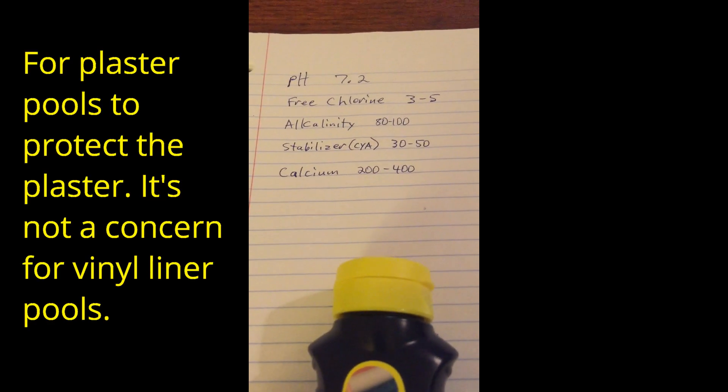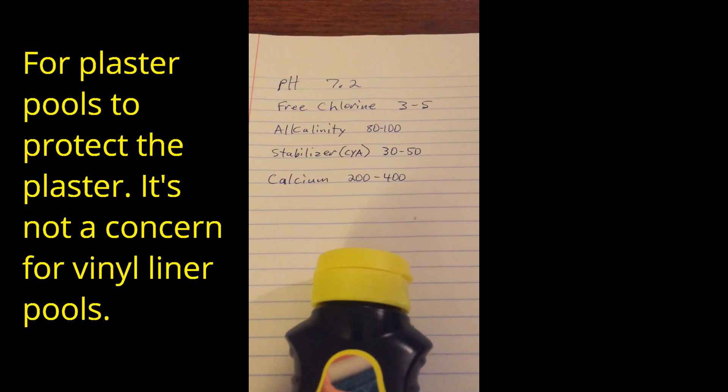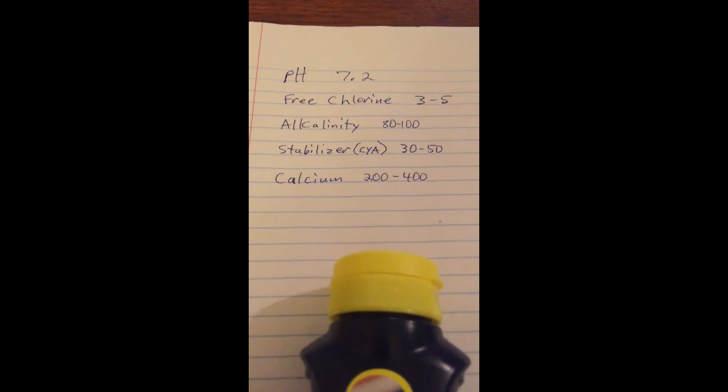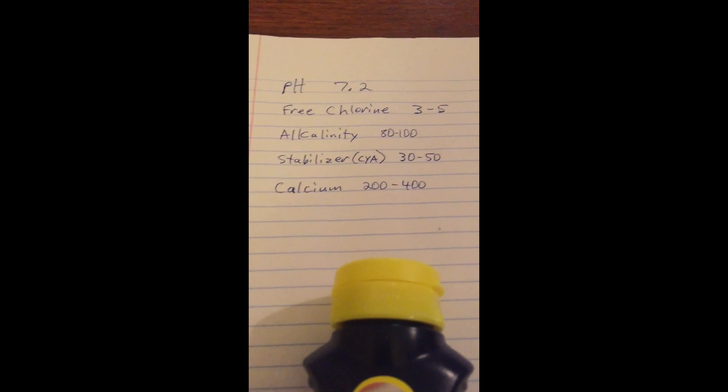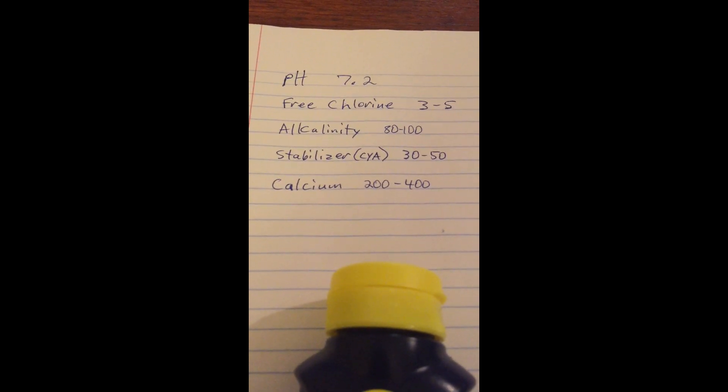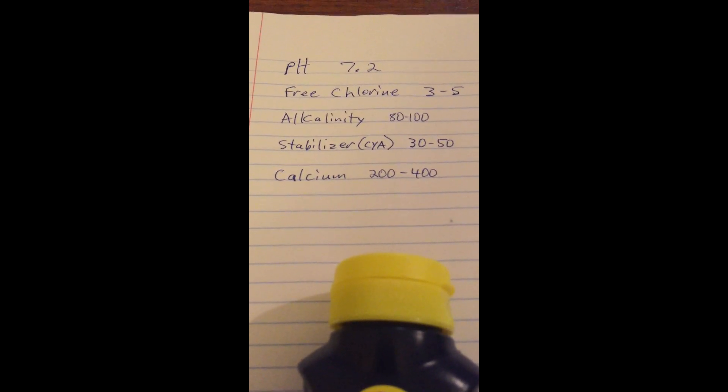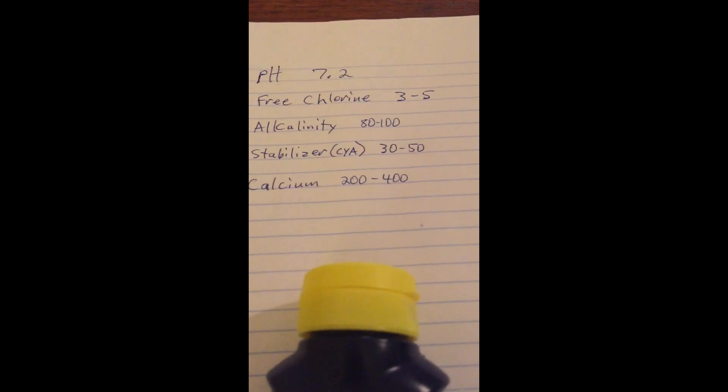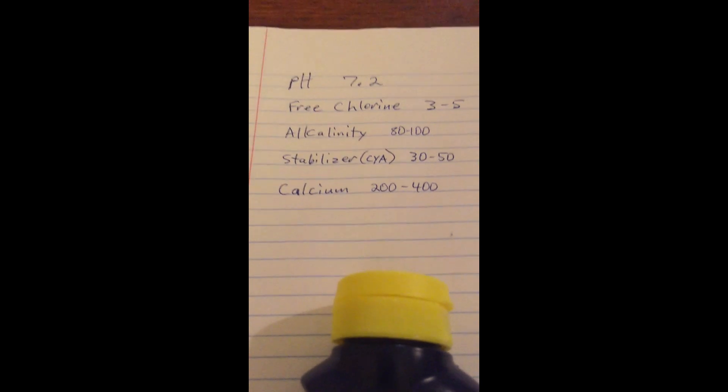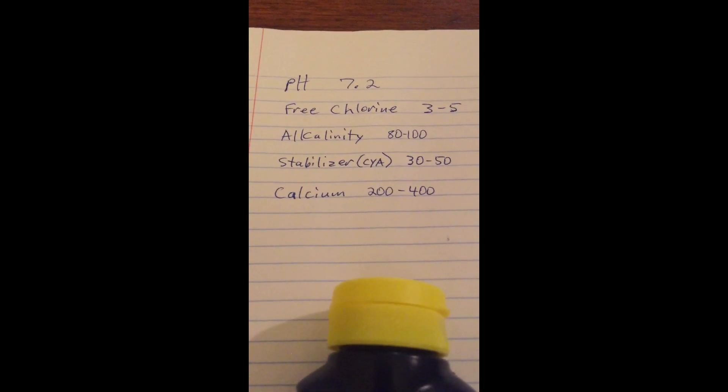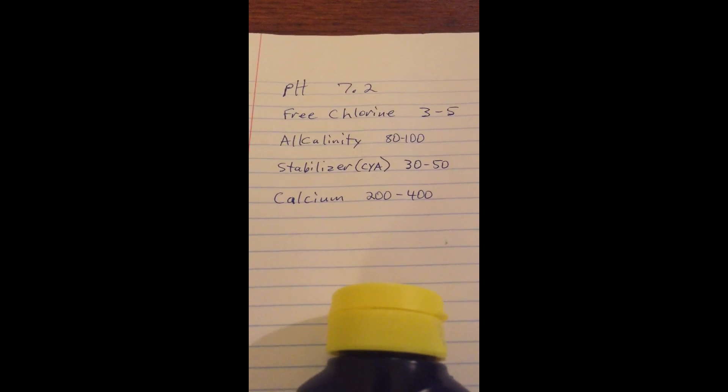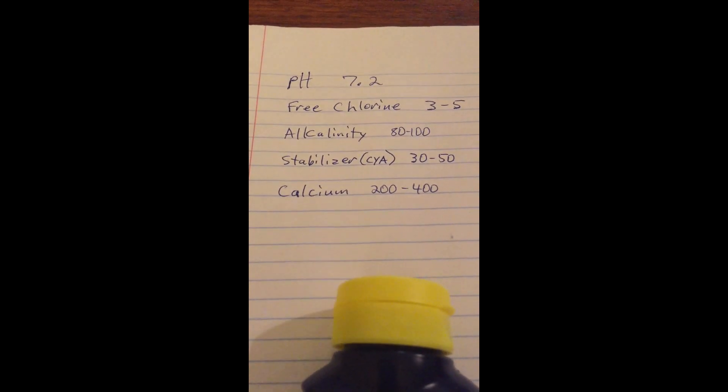Last thing is calcium. Calcium is a part of balancing the water in the pool. I usually recommend you can get some specific test strips, but the colors for the test strips are hard for me to distinguish. So I do not use test strips that test calcium level. I use a dropper kit that tests the specific calcium level. So you can get just a dropper kit that tests it, or you can take it into a pool store.